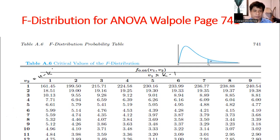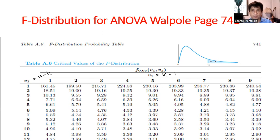Alpha is the probability of a Type 1 error. If the calculated F value is greater than the F-table value, there is a significant difference between any mean of the treatments — meaning the value falls in the critical region, similar to how the T-test works, and there will be significant difference.